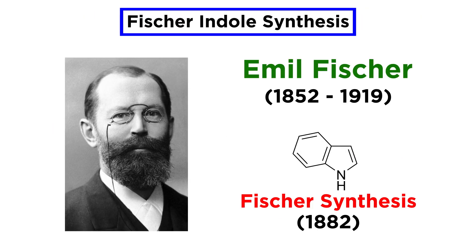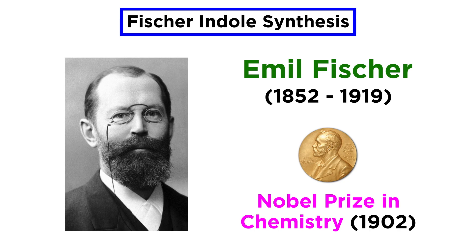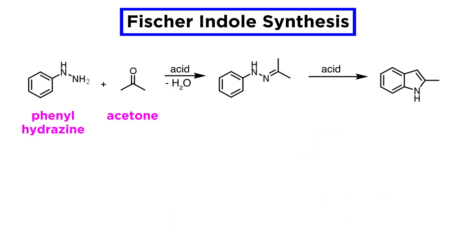A very important route to indoles is the Fischer synthesis, which was discovered in 1882 by the famous German chemist Emil Fischer, who was a Nobel Prize winner in 1902. Here we see the reaction illustrated for the simple case of phenylhydrazine and acetone; however, it works generally for all arylhydrazines and ketones.